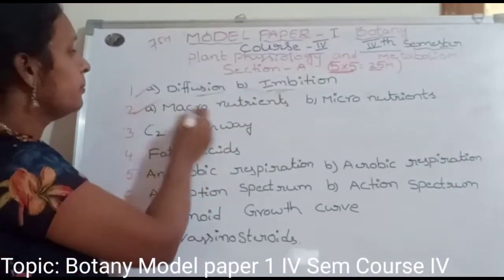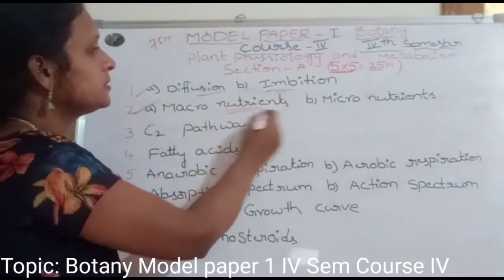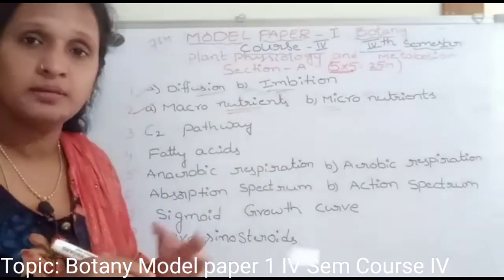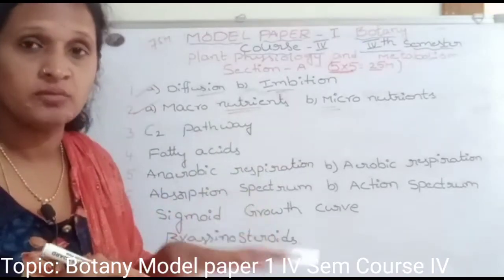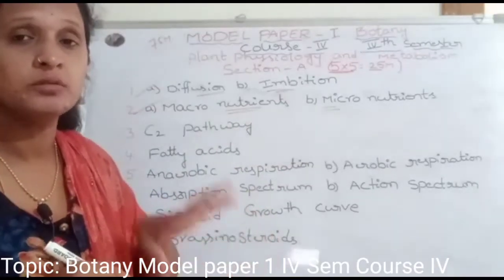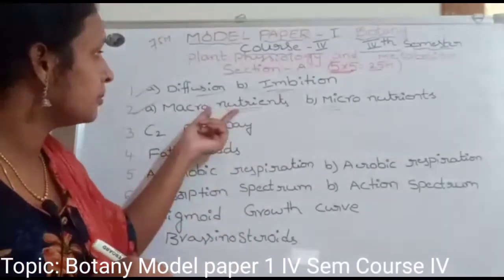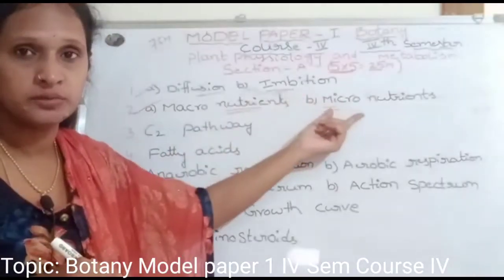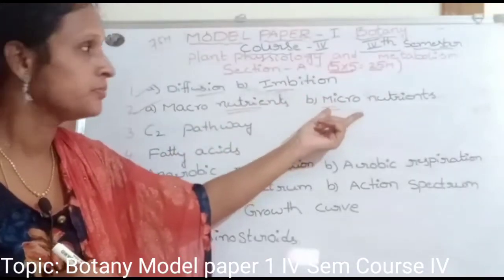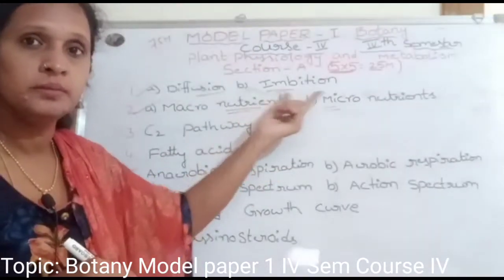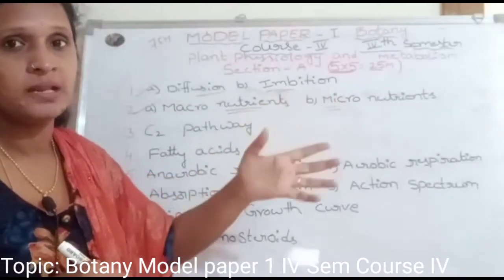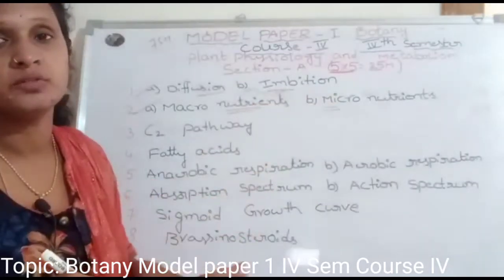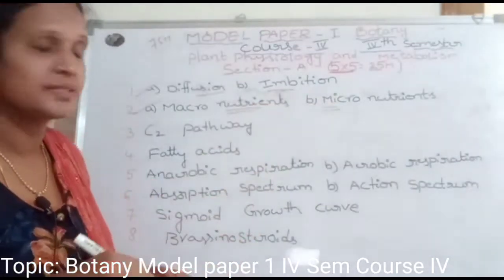Next question: Macronutrients and Micronutrients. Plants absorb water and minerals. There are macronutrients and micronutrients. Macronutrients are 9 in number, and micronutrients are 11. We explain these nutrients.